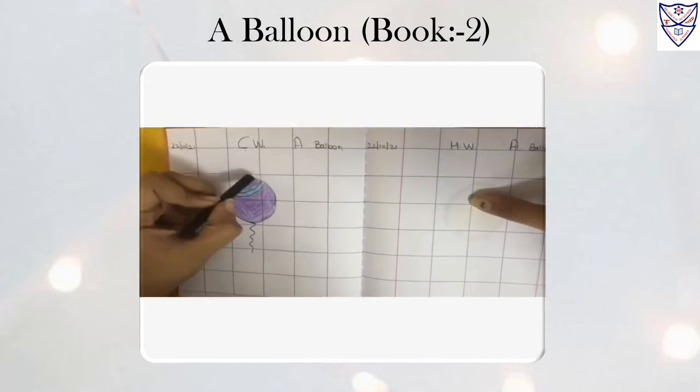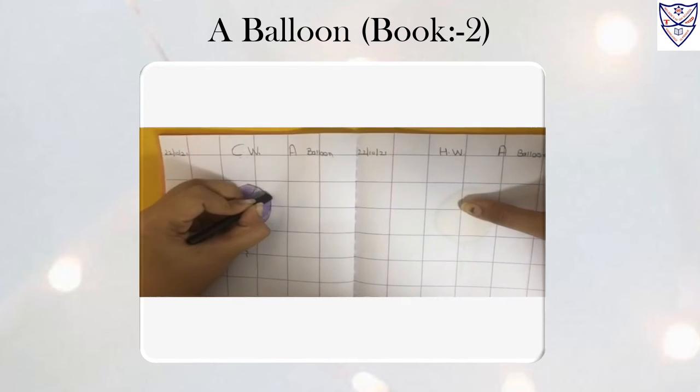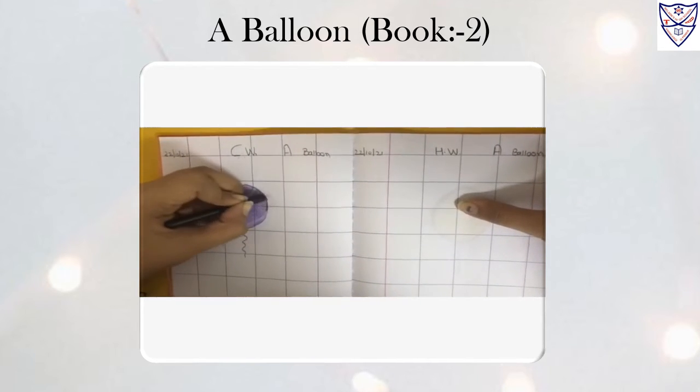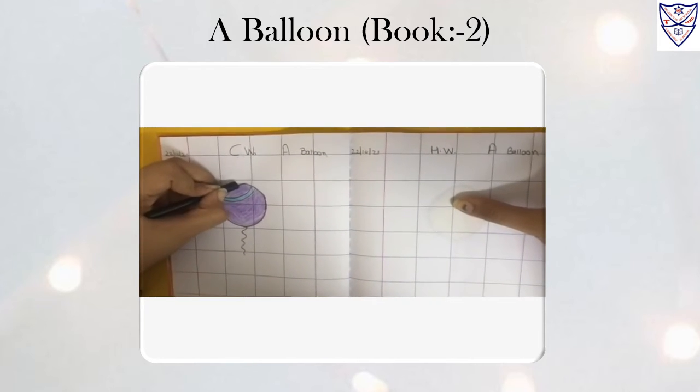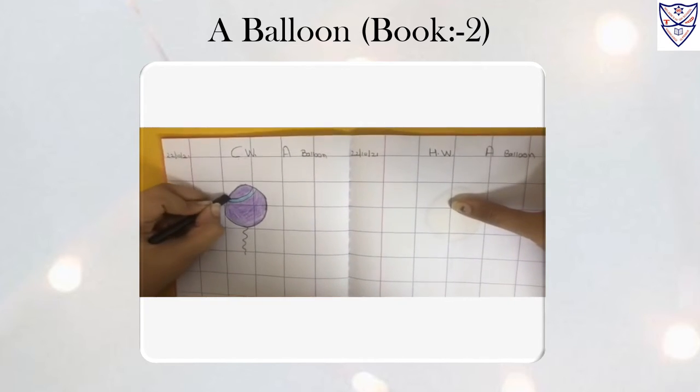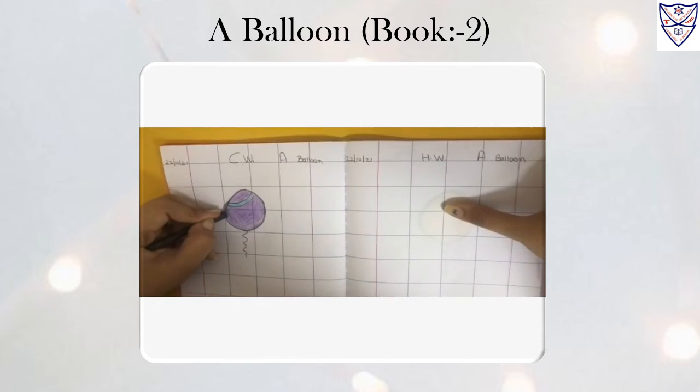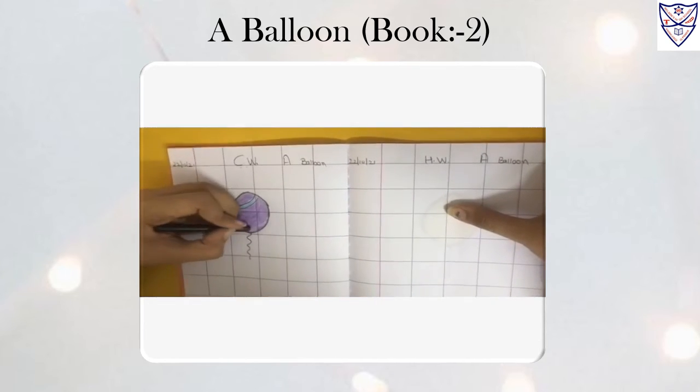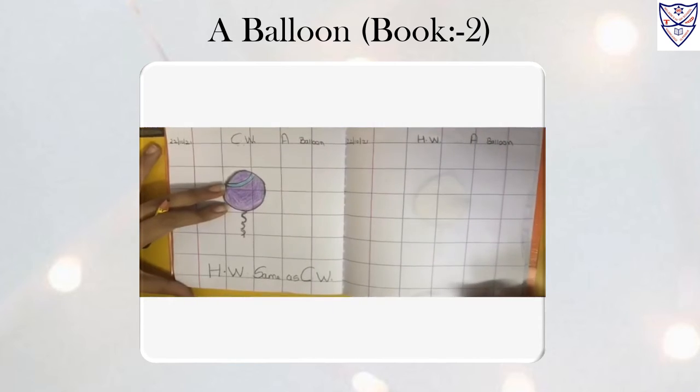Now we have to take one black crayon and do the outline like this. Only use black color.